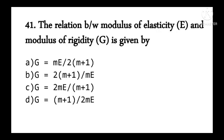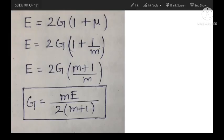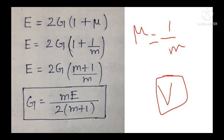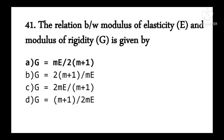The relation between modulus of elasticity E and modulus of rigidity G involves Poisson's ratio, which can be denoted as μ, 1/m, or capital V. Substituting 1/m for μ in the standard relation and solving for G gives G = mE / (2m + 1). Option A is correct.